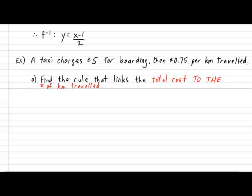Therefore, your rule should look like the following: Cost should equal 75 cents per kilometer plus the $5 just for boarding. And if you should decide to put it in terms of x and y, then this is also acceptable: y is equal to 0.75x plus 5, where y represents the total cost and x represents the number of kilometers.